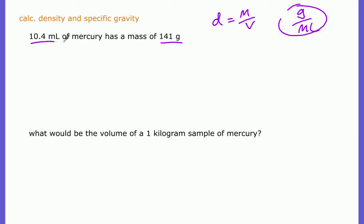This is just starting out pretty simple, gets a little bit more complicated. But if you had a 10.4 milliliter sample of mercury and it has a mass of 141 grams, you should be able to tell me what the density of mercury is.